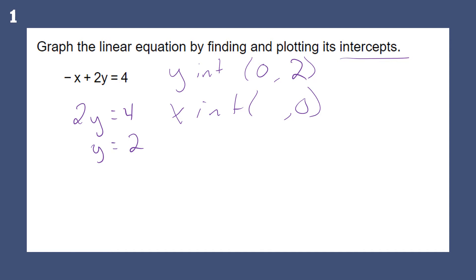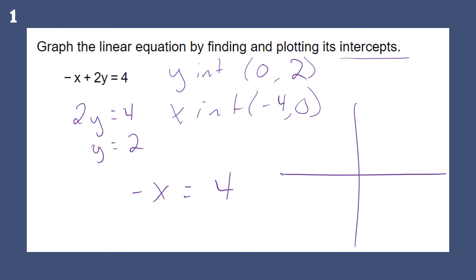We can plug in zero the other way and we get negative x equals 4, so x equals negative 4. Plotting those points on the x and y-axis and connecting the dots gives us our line.